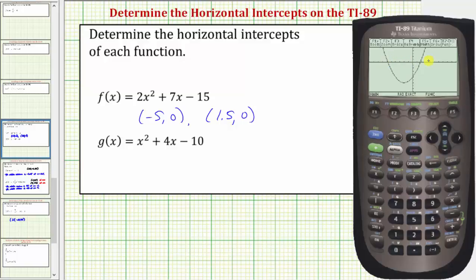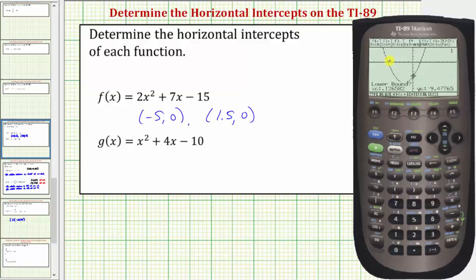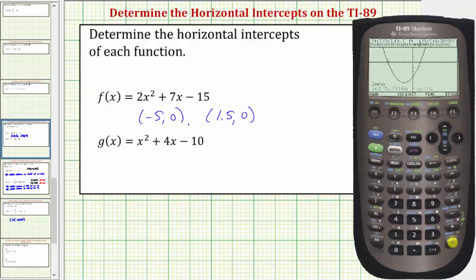Again, notice how we have two horizontal intercepts. To determine the coordinates, we'll press F5 for math, two for zero. Let's find the point on the left first, so we'll press the left arrow until the cursor is to the left of that horizontal intercept, then press enter. For the upper bound, move to the right of the horizontal intercept and press enter. Notice for this example we're getting decimal approximations. The coordinates of this point is approximately negative 5.74166 comma zero.